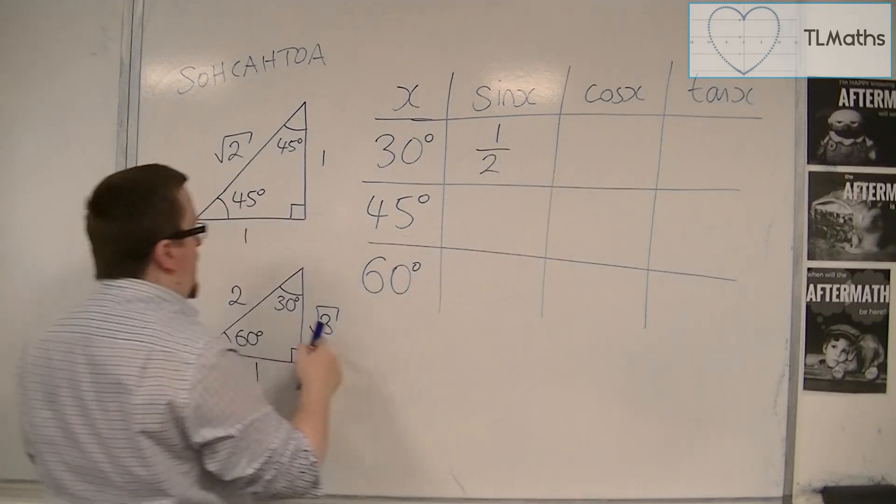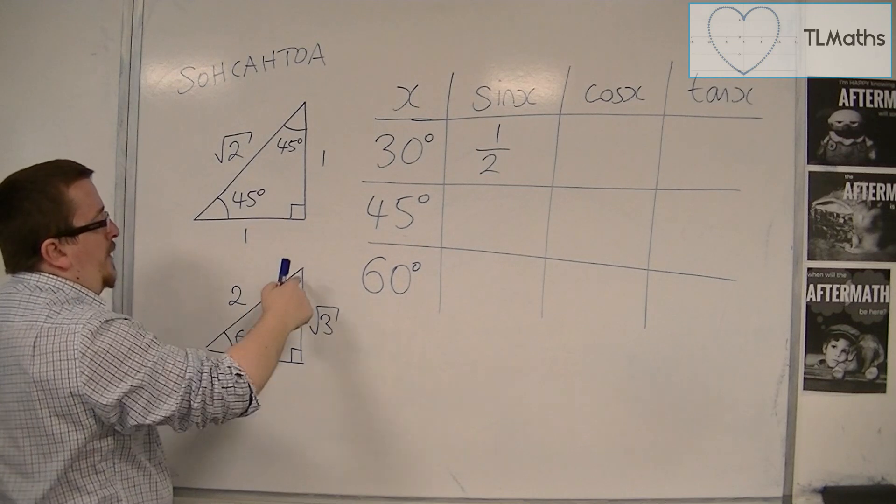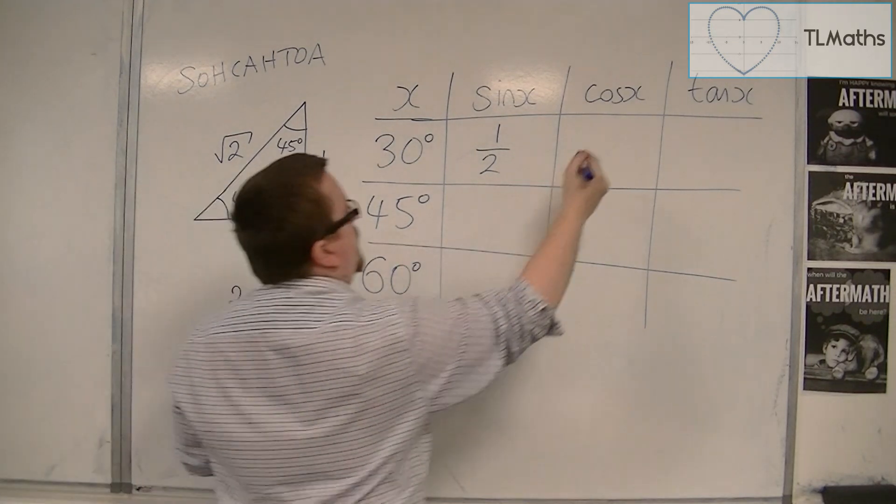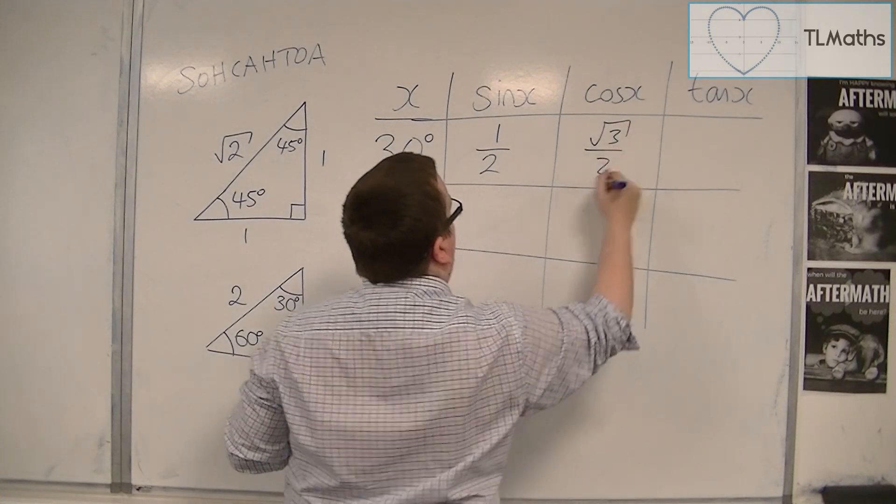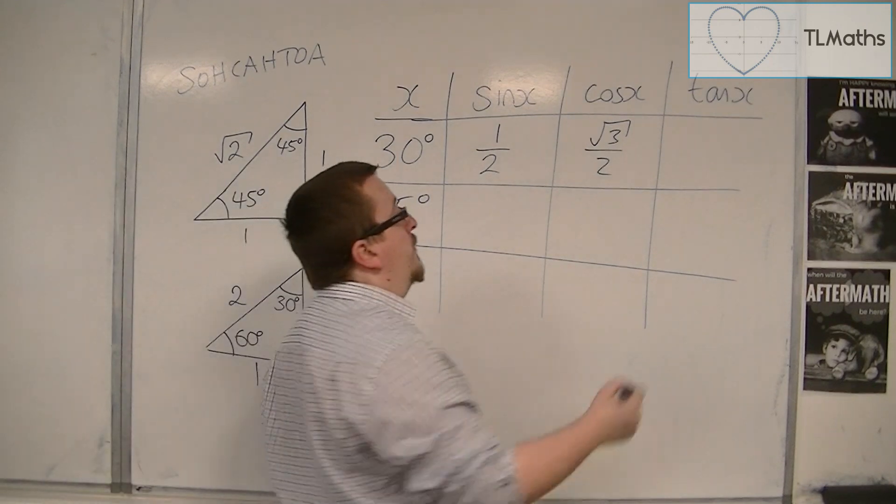Cos of 30, well, there's 30. Cos is adjacent over hypotenuse. So root 3 is the adjacent over 2. Tan is opposite over adjacent. So that's 1 over root 3.